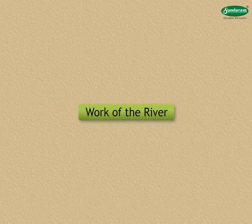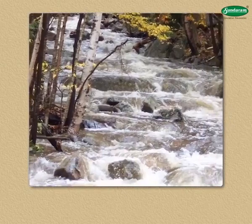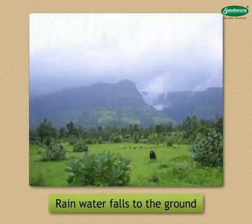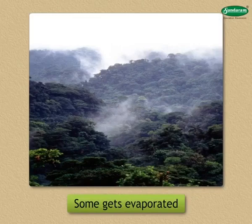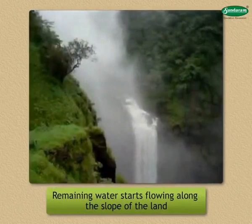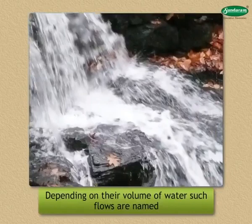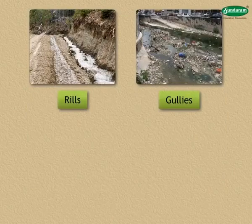Let us now study the work of the river. Before we get into its details, let us try to understand how a river is actually formed. Some of the rainwater falling on the ground seeps through it and some gets evaporated. The remaining water starts flowing along the slope of the land from higher to lower ground. Depending on their volume of water, such flows are named rills, gullies, streams, rivers, etc.